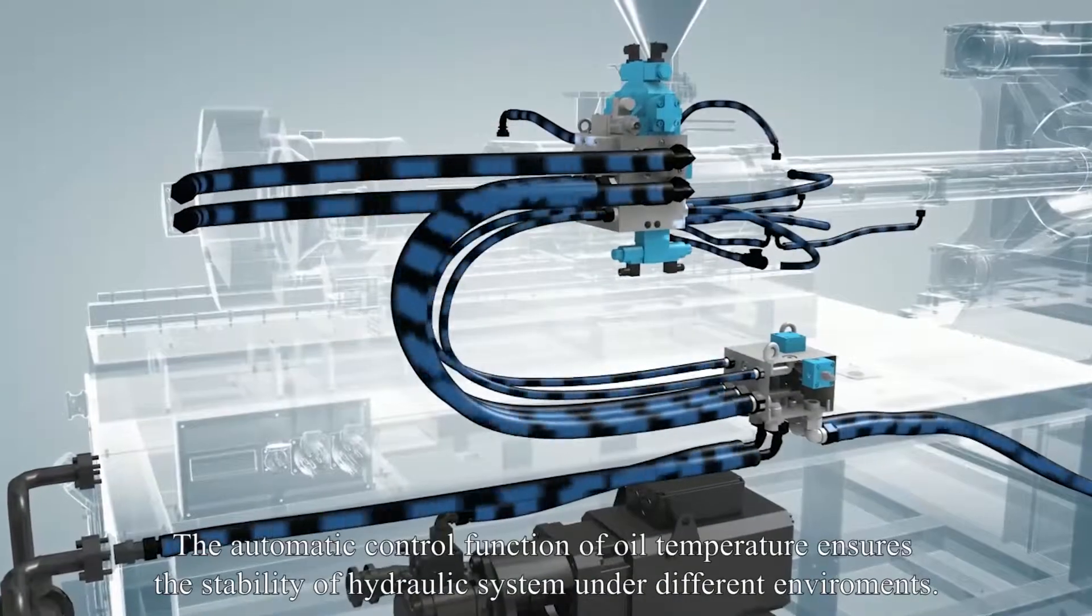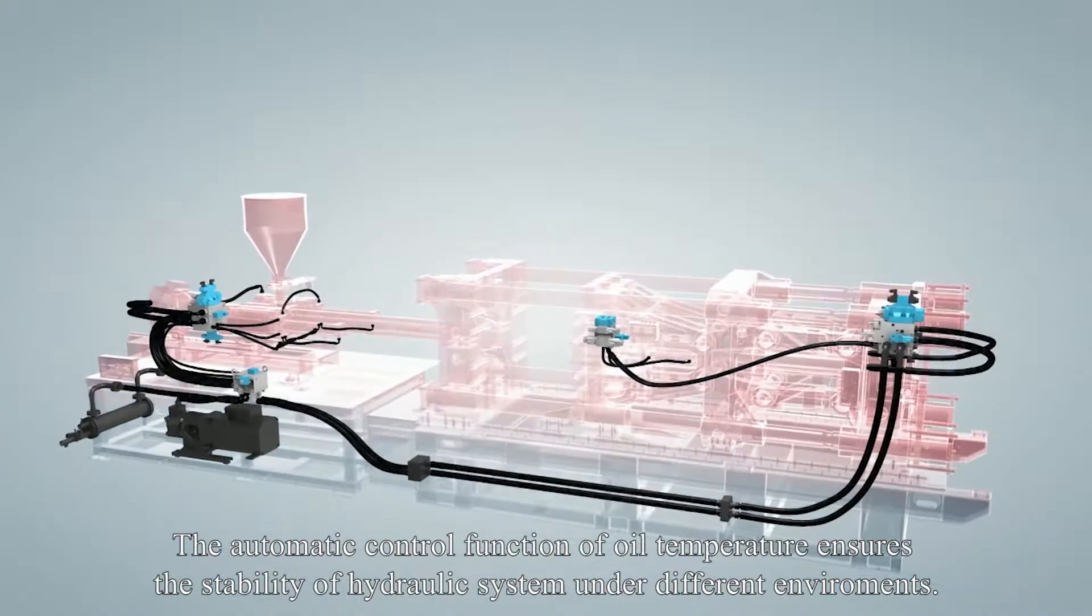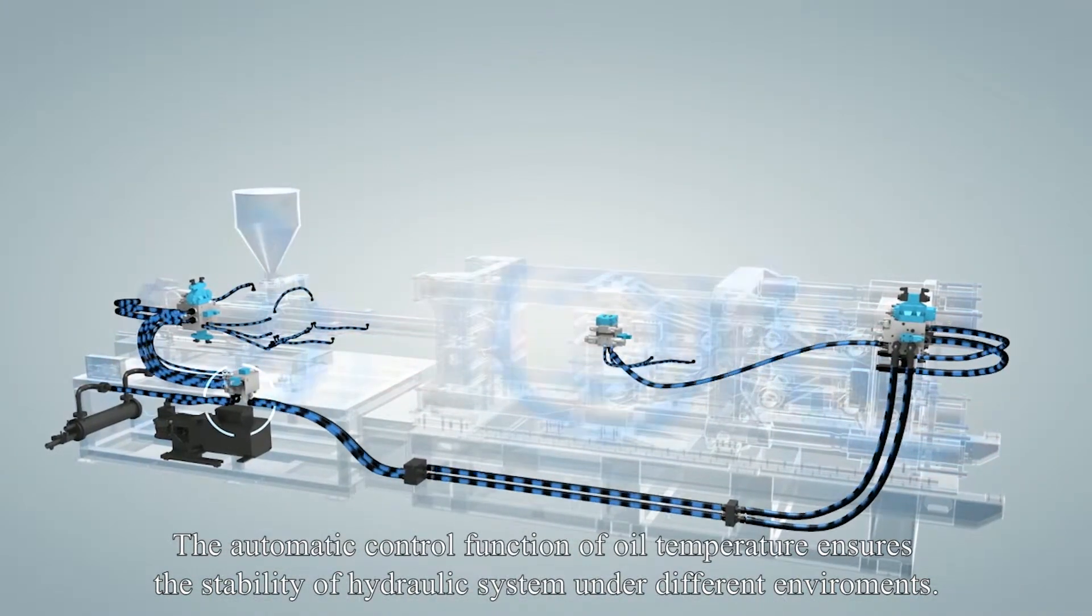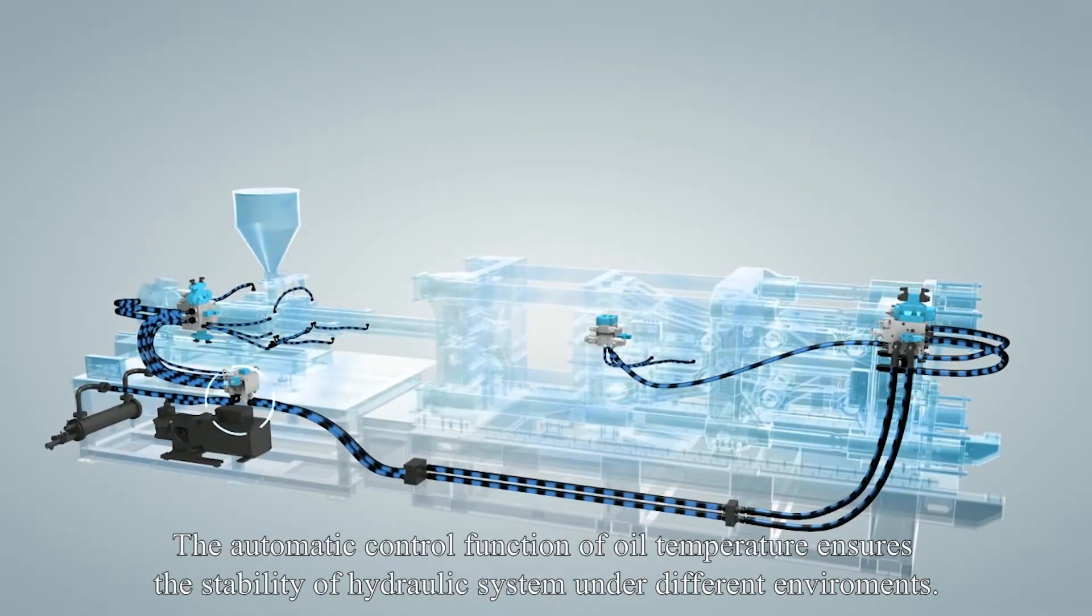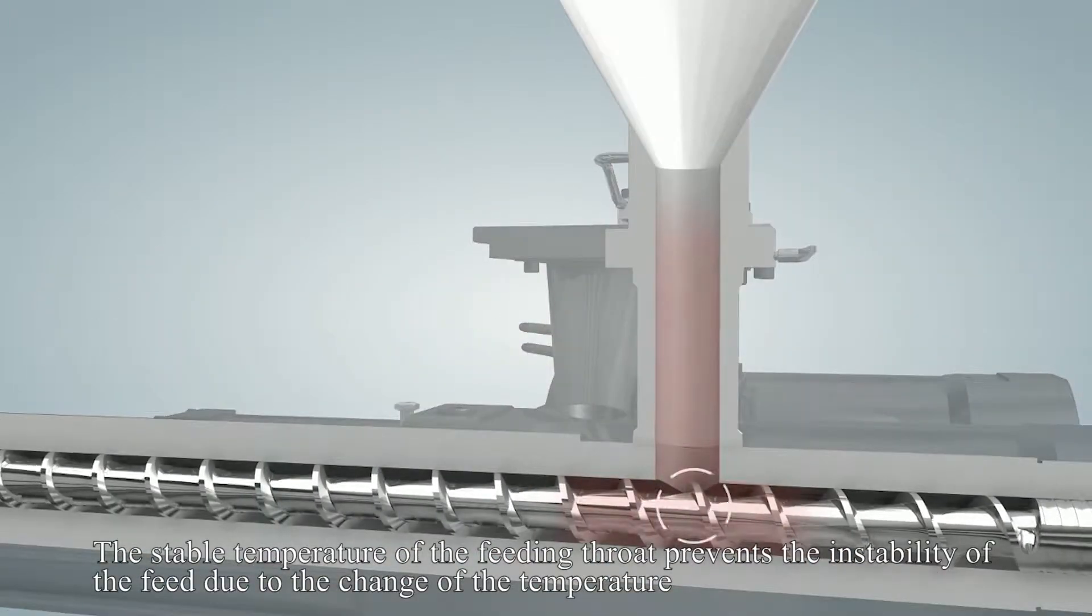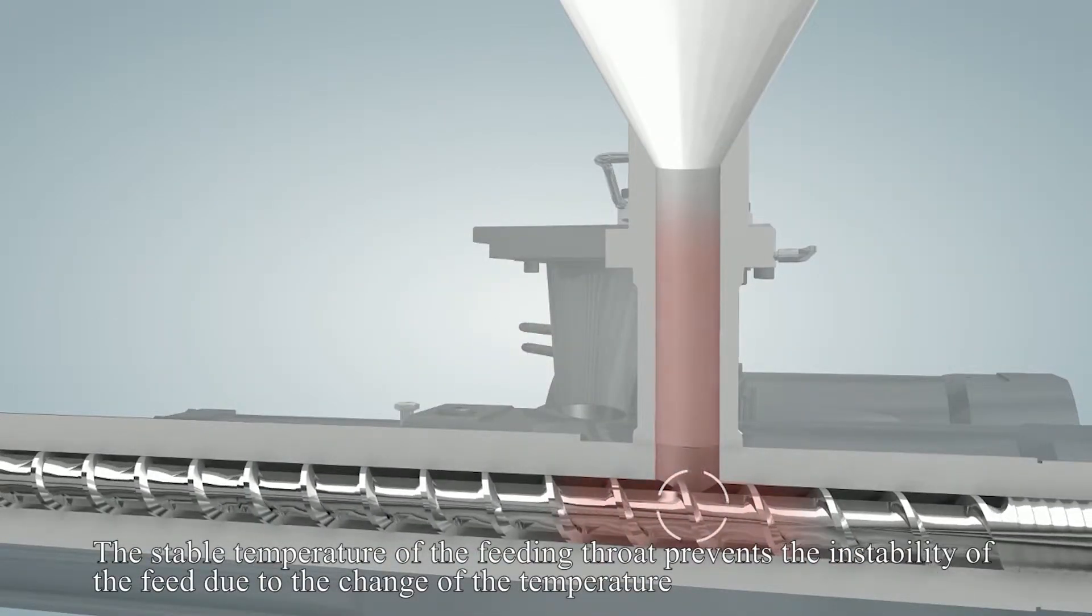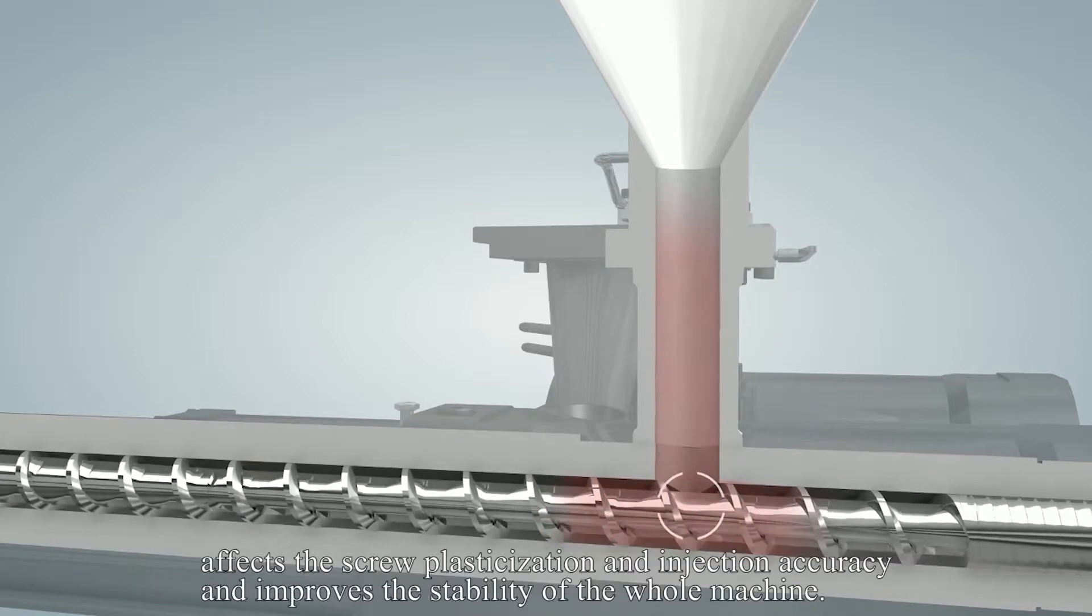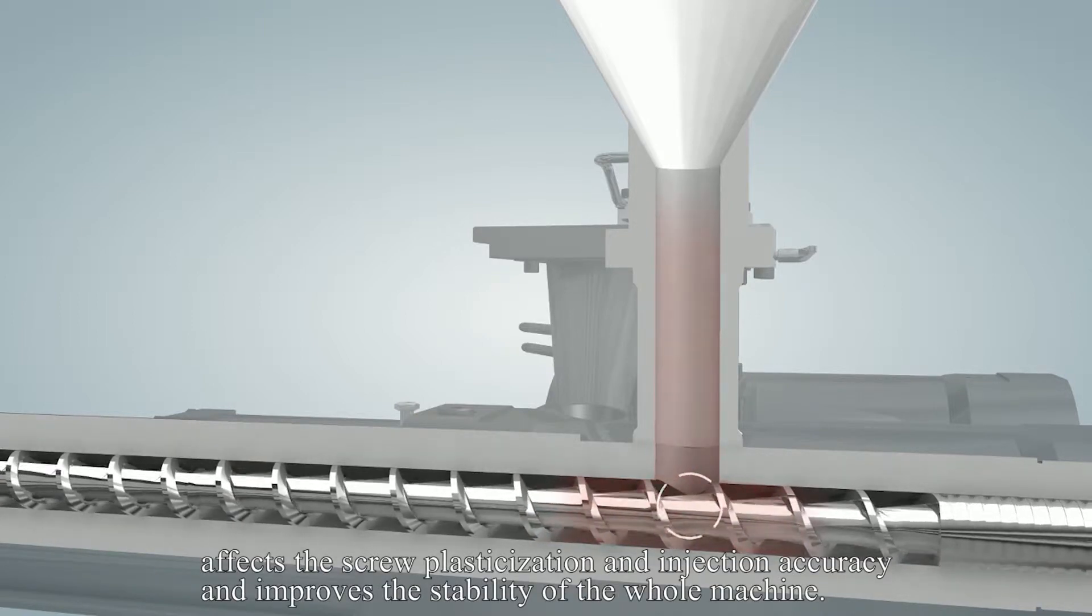The automatic control function of oil temperature ensures the stability of hydraulic system under different environments. The stable temperature of the feeding throat prevents the instability of the feed due to the change of the temperature, affects the screw plasticization and injection accuracy, and improves the stability of the whole machine.